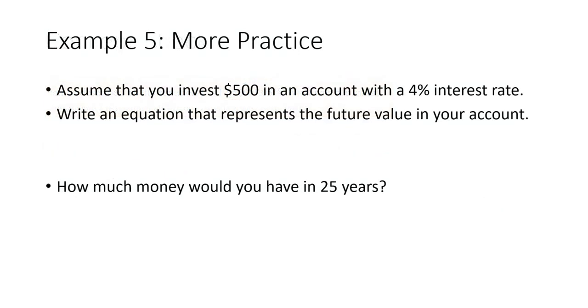So what if we invest $500 in an account with a 4% interest rate? How can we write an equation to find the future value, and how much money will we have in 25 years? Well, to do that, the future amount is going to be equal to the initial amount, 500, times some number raised to the x power, where x represents the number of years. In the first problem, our interest rate was 7%, and we multiplied by 1.07. In the second problem, it was 5%, and we multiplied by 1.05. With a 4% interest rate, we're going to multiply by 1.04 each time.